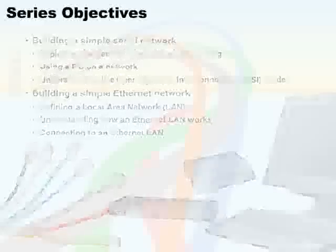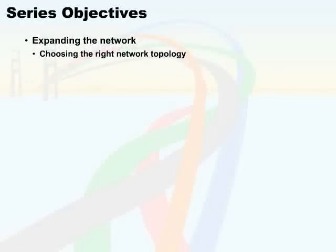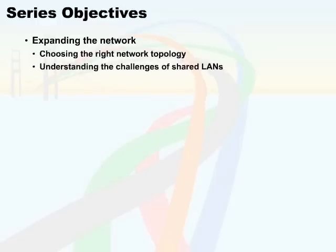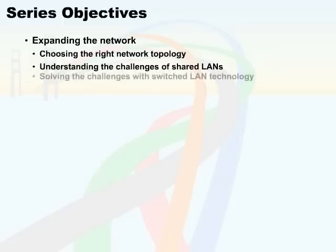In addition to this, we want to be able to expand the network, choosing the right network topology — whether that's a bus, a star, a mesh, or a partial mesh. We want to make sure that we understand how the appropriate topology relates to the underlying technology. We also want to understand the challenges of shared local area networks — what can be some mitigating factors when deploying a shared network, from a performance or cost standpoint, and how we can solve these challenges by using switched LAN technology, maximizing the benefits of Ethernet switching.